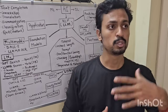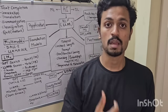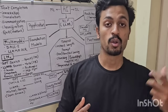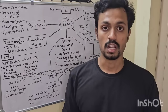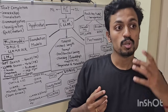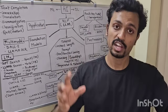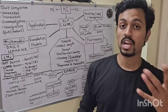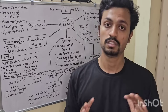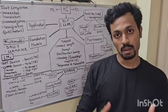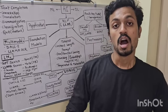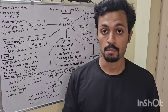Then Classification — suppose you have a task: if you give a person's name, the model can classify whether they are a politician or an actor. So you can use AI for classification purposes. Then Q&A Chatbot — most of you are familiar with this. One of the greatest examples is ChatGPT. You can also find Meta AI in WhatsApp.